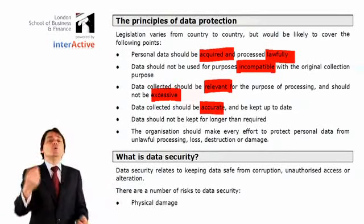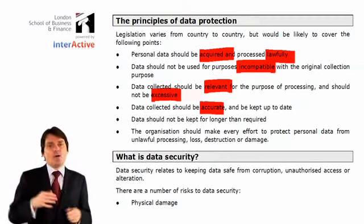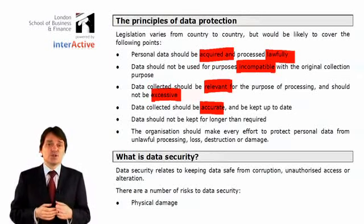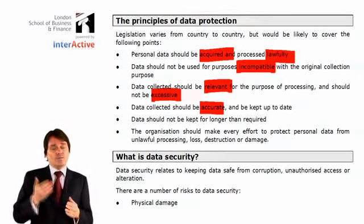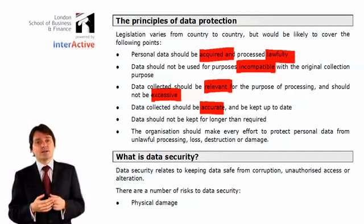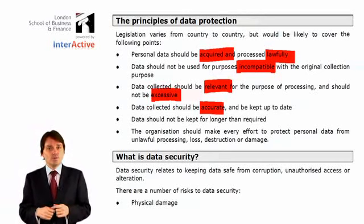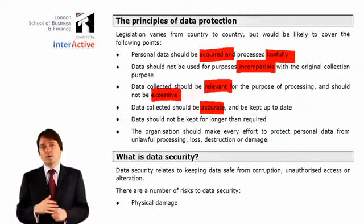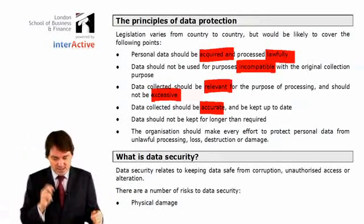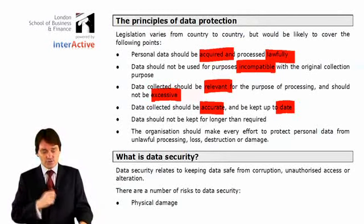Data should be accurate. For example, if a customer was being taken to court for not paying a bill, you might refuse them credit. But if that court case is settled in their favour two weeks later, you must update your records accordingly and now give them credit. It's up to you to keep records accurate and up to date — if things have changed, your records must reflect that.